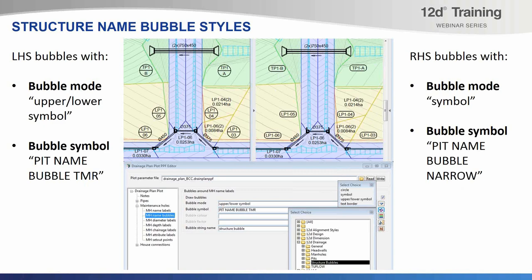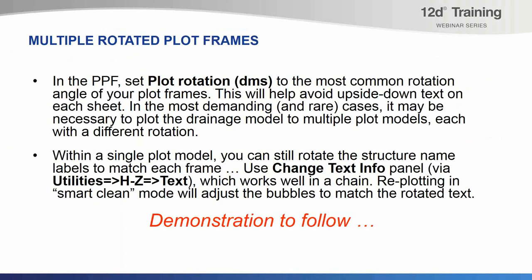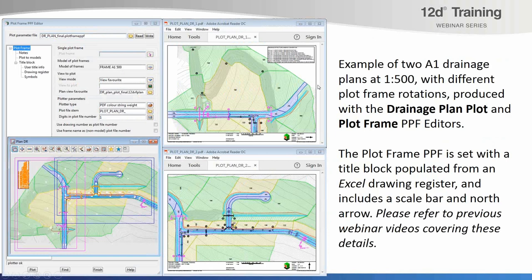I'm running a bit short on time, so just to finish off: we've covered multiple rotated plot frames and here's a summary of producing those two A1 drainage plans including catchment plans, both at 1 to 500 with different rotations, produced with the drainage plan plot together with the plot frame PPF editor. The plot frame PPF is set up with a title block populated from an Excel drawing register and includes a scale bar and north arrow. I'd encourage you to go back to YouTube and have a look at the recordings of earlier webinars that cover those details. I'll now open up the webinar to questions and answers.